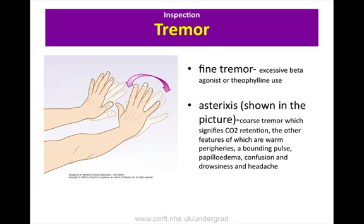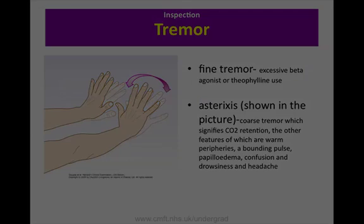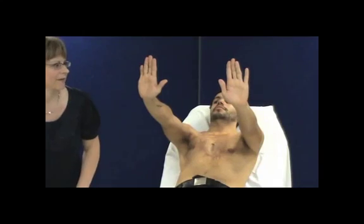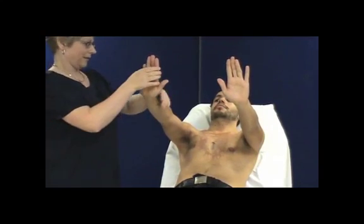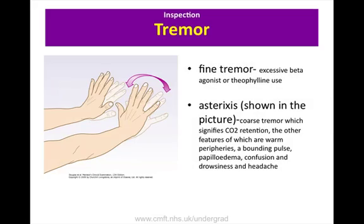Check for a fine tremor of the hands when the patient is at rest. This may be due to excessive use of beta agonists such as salbutamol or theophylline medication. Then look for asterixis, which is a coarse flapping tremor seen in severe carbon dioxide retention and respiratory failure. Ask the patient to put their hands straight out in front of them and cock their wrists back, watching for a few seconds for a jerky flapping tremor.